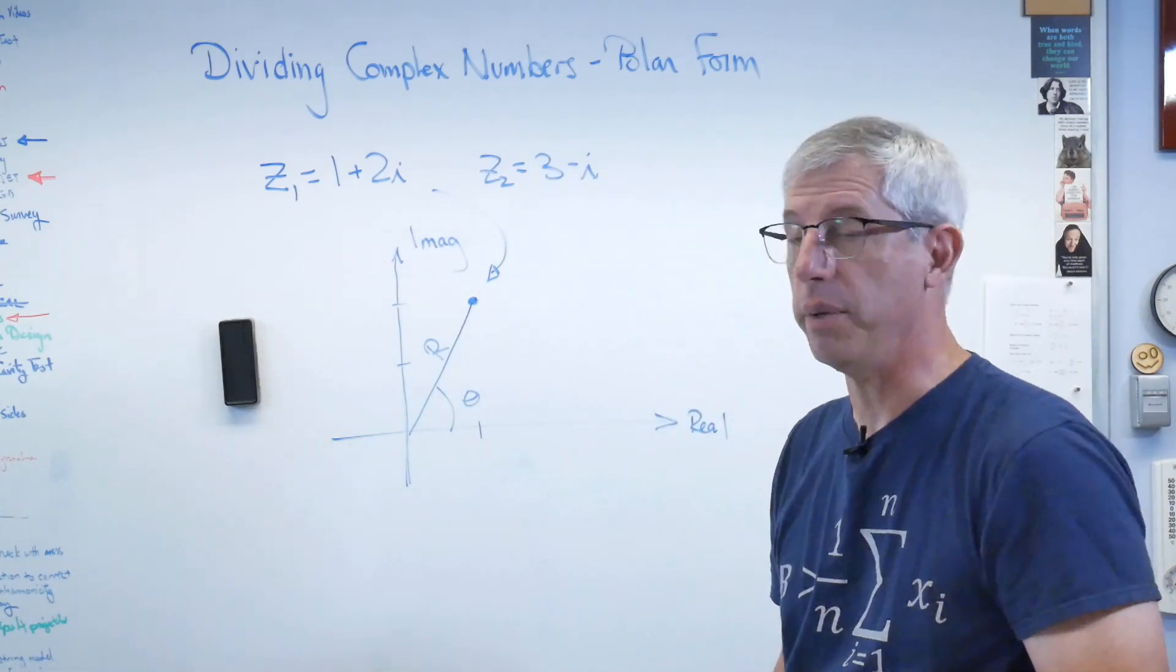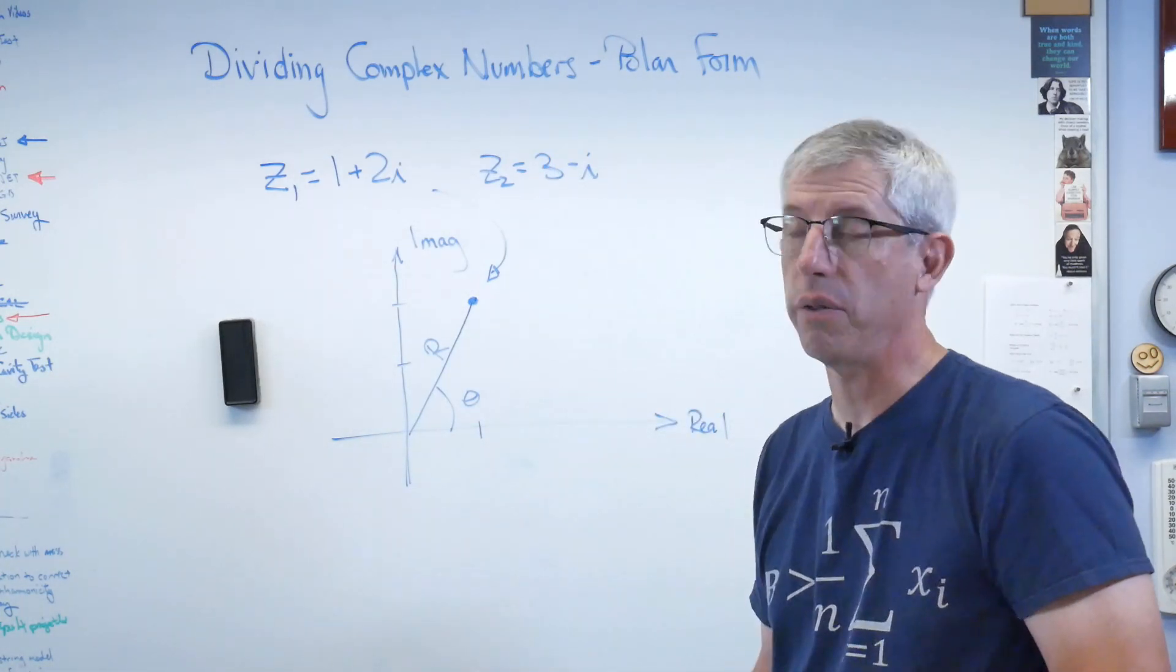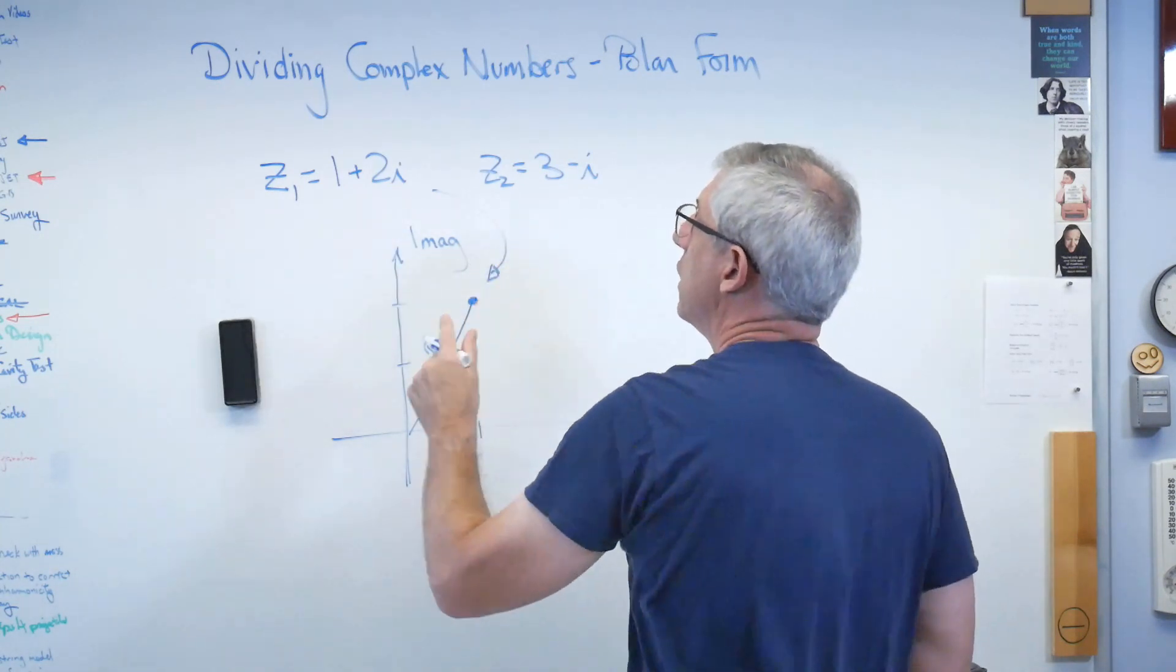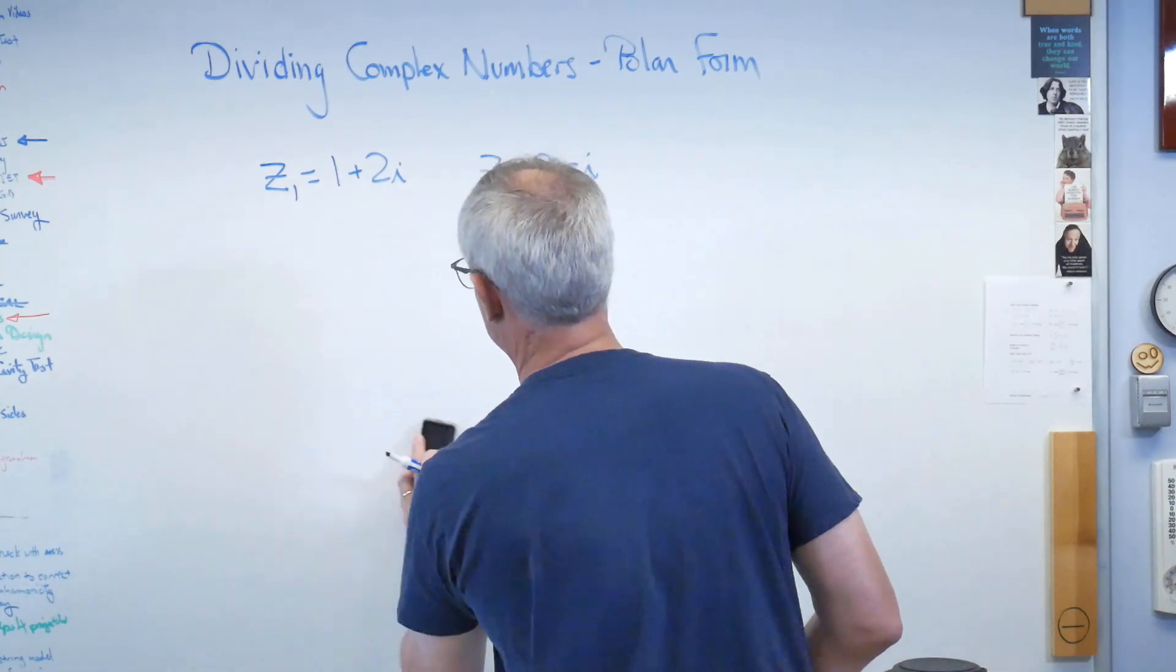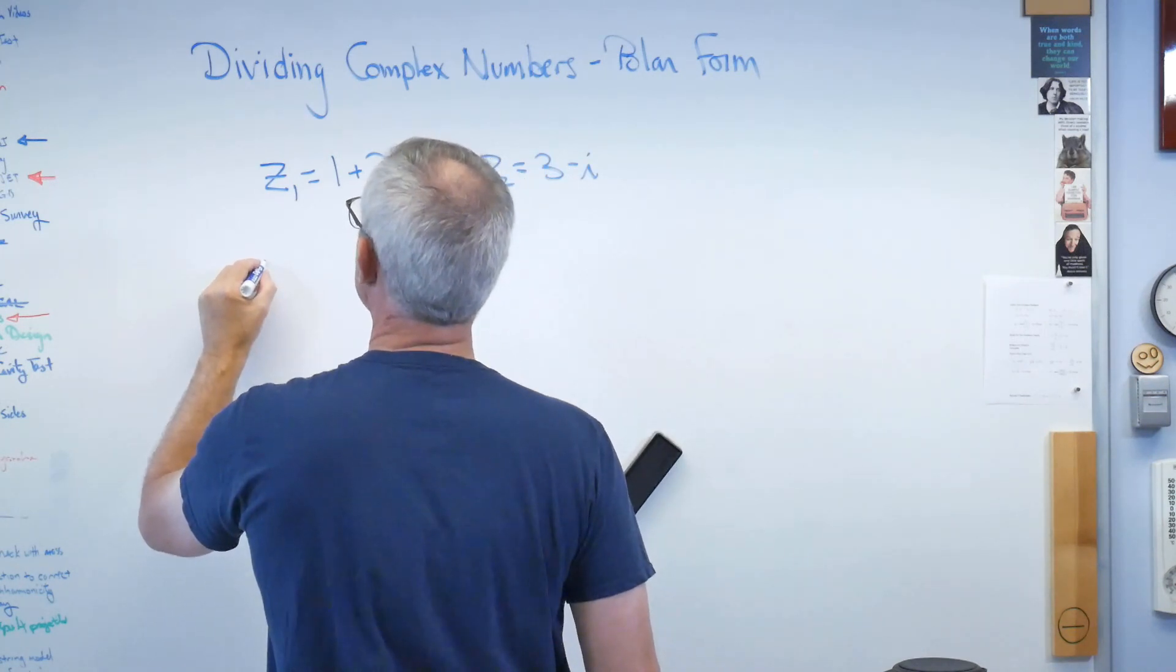Well, the other way to describe the location of this in two-dimensional space is a magnitude and an angle. That's completely legitimate. It's just in polar form rather than rectangular form. So I'm going to put both of these numbers into polar form. So let's see,